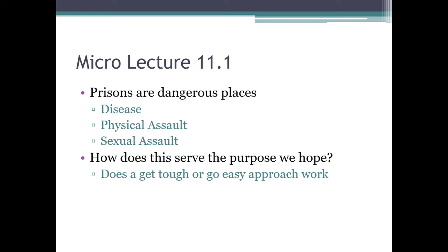We do have microlectures. The first microlecture, 11.1, is the idea that prisons are dangerous places. We'll talk about problems of disease in prison, physical assault, and sexual assault. We'll mention these in this chapter, and some statistics might be helpful — including how the dangerousness of prisons relates to what we're seeking to accomplish.